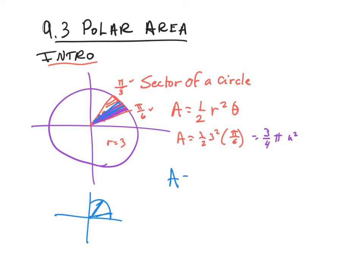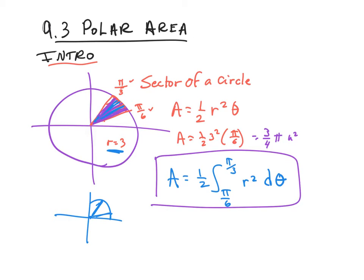In order to do that, we get area equals one-half times the integral from pi over 6 to pi over 3 of r squared. Now r is going to change based on some equation — right now my r is just 3, so that's not a big deal. Instead of having one theta, theta is going to be smaller and smaller pieces to get these small sectors. So theta goes to zero, and this is the formula you're going to need for polar area.